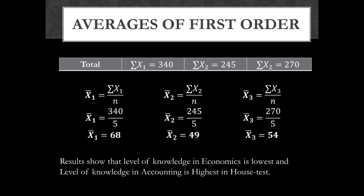So if you see, accounting has the maximum average and is the highest in the house test, and the average of economics is the lowest. That means the level of knowledge in economics is the lowest.